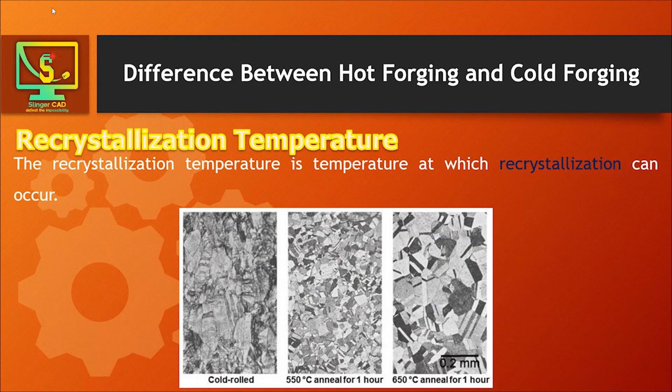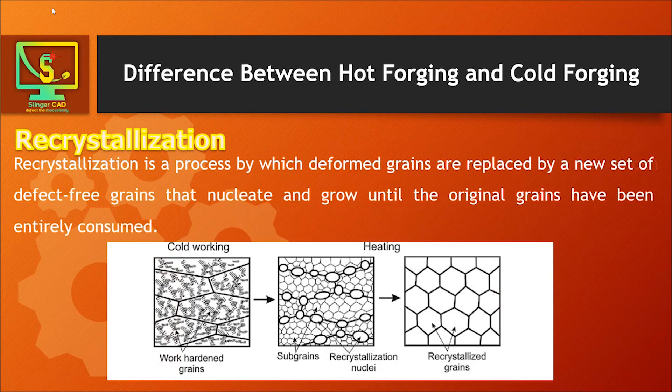Recrystallization temperature is the temperature at which recrystallization occurs in a material. Recrystallization is a process by which deformed grains are replaced by a new set of defect-free grains that nucleate and grow until the original grains have been entirely consumed.